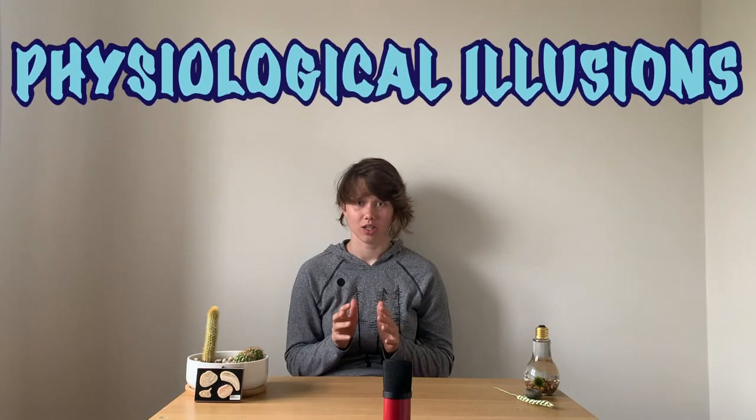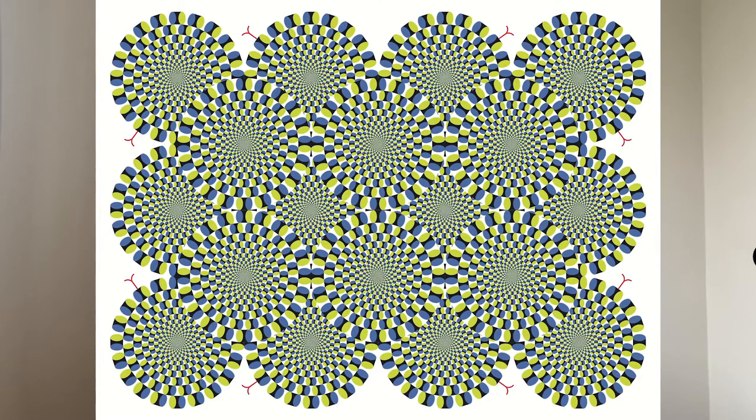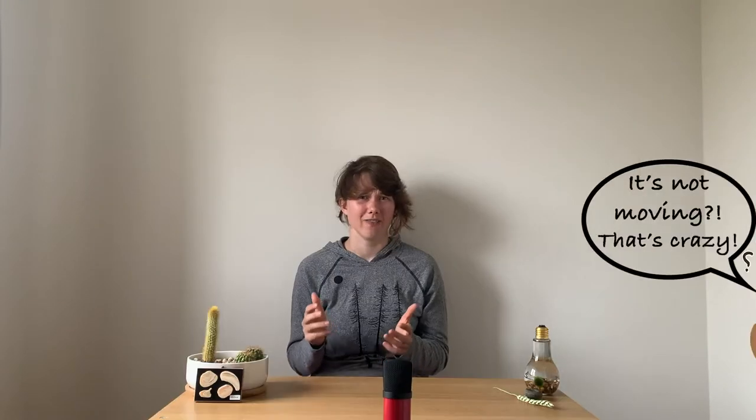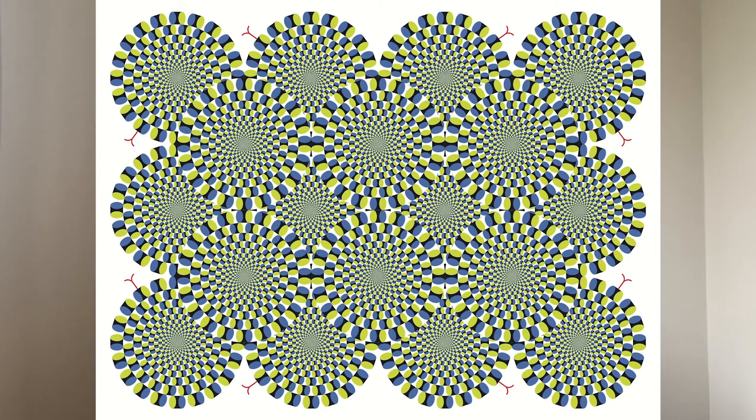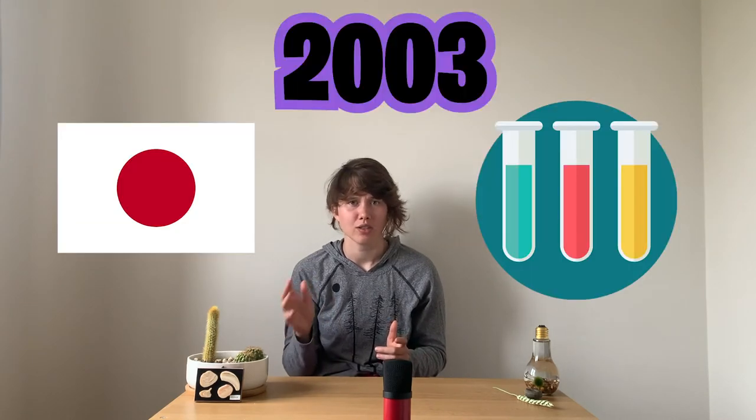The last type of illusions are called physiological illusions. These are the least understood and play with different shapes, colors, and patterns in a specific relationship to confuse and overwhelm your brain. Take a look at this image and stare at the very center. Wait for about three to five seconds — the snakes are moving, but it's an image, not a video. Look at a different part of the image and it'll stop moving. This illusion creates a perceptual experience of motion and was created by Japanese scientists in 2003.